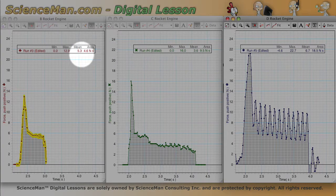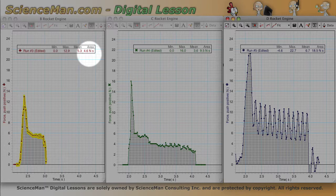Wow! So as we compare these three rocket engines, we got 4.6 newton-seconds of impulse from the B, 9.5 from the C, and 18.5 from the D.